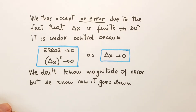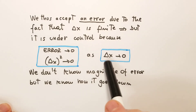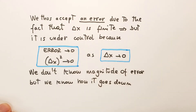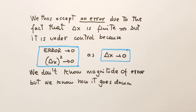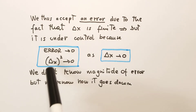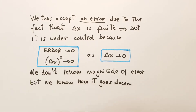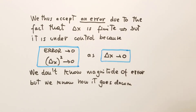By having delta x finite we have the error under control, because we know that as delta x goes to 0 the error also goes to 0. In this case, which is a second-order approximation, we have the error going as delta x squared. We don't know exactly the magnitude of the error, but we know how it decreases as delta x approaches 0.